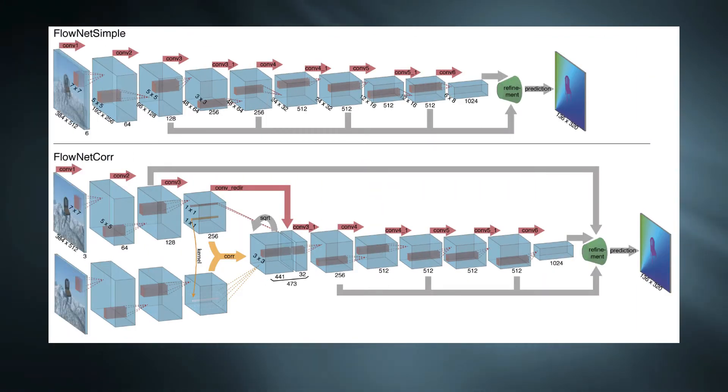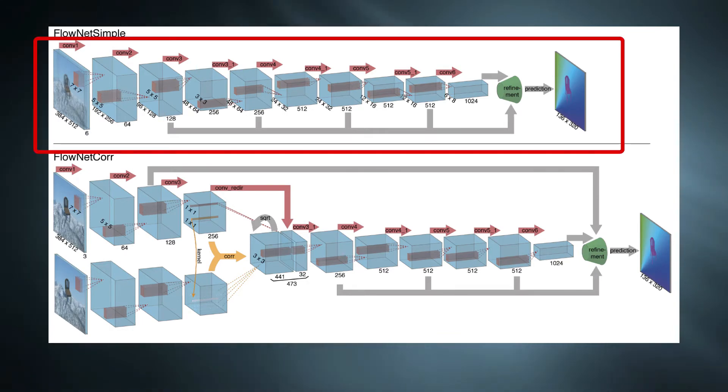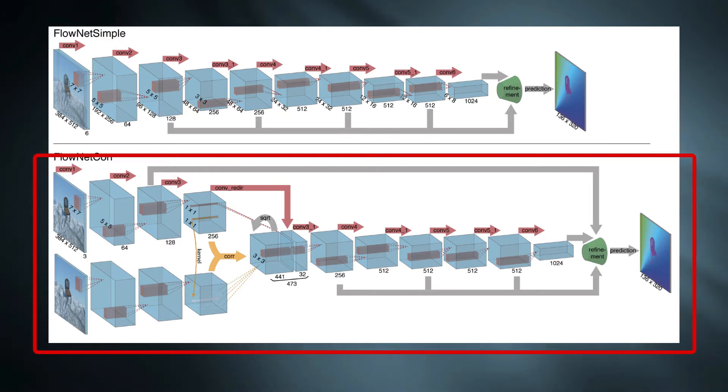Because of this reason, the authors developed two architectures. One with standard CNNs and other with an additional correlation layer which is used to find the match between features of two images.